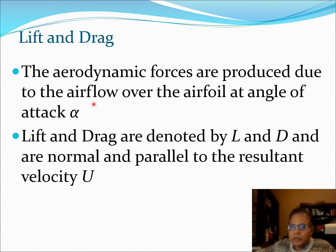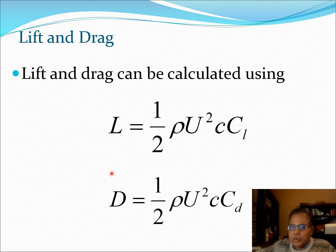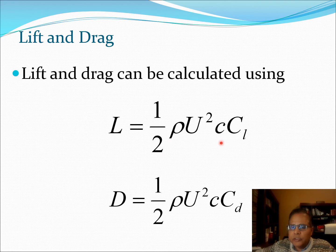These forces are produced by the air flow which is taking place on top of this airfoil cross section and we will denote the forces as lift and drag L and D. These are normal and parallel to the resultant velocity U. From our knowledge of fluid mechanics we know that L is half rho u square c Cl and D is half rho u square c Cd where Cl and Cd are the lift and drag coefficients respectively.